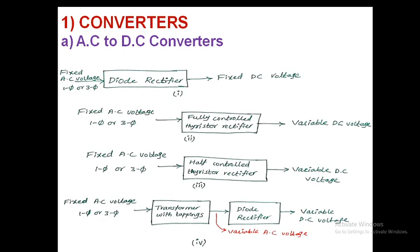Coming to the converters, the first type is AC to DC converters. There are various ways to convert AC to DC. If the input is fixed AC voltage, either single phase or three phase, by using a diode bridge rectifier we can convert that fixed AC voltage to fixed DC voltage.